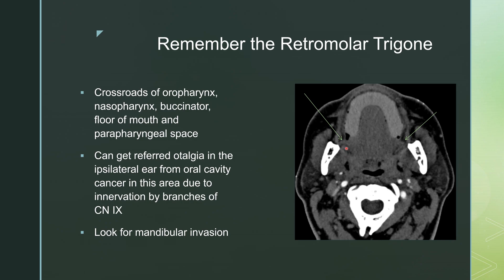You can get referred otalgia in the ipsilateral ear from oral cavity cancer due to innervation by branches of cranial nerve 9. So a patient that presents with persistent ear pain — definitely check the retromolar trigone as well. In this space you're right next to the cortex of the mandible, so any mass in this area, always look for invasion of the mandible, specifically erosion of the mandibular cortex.